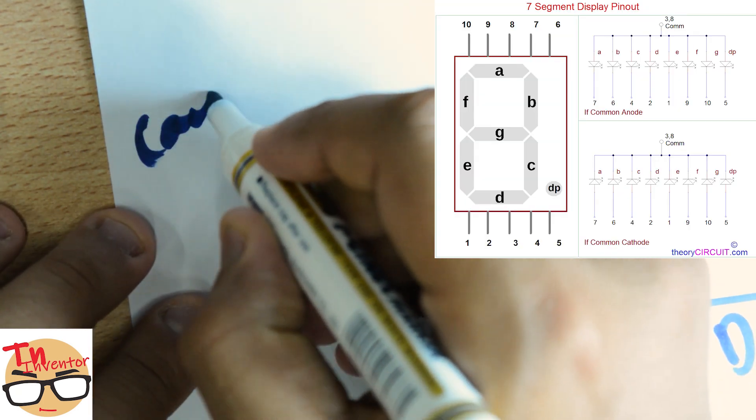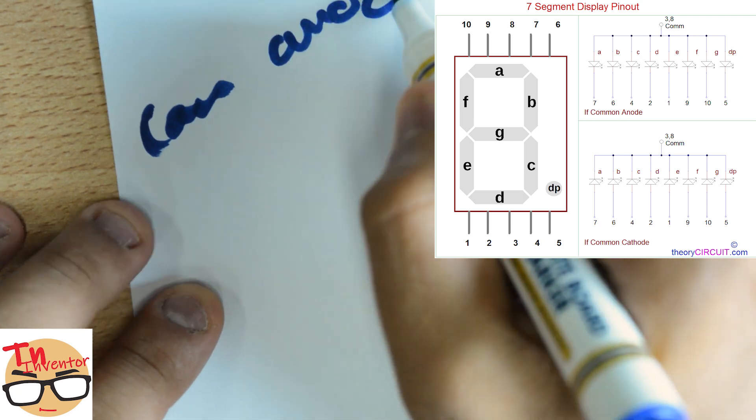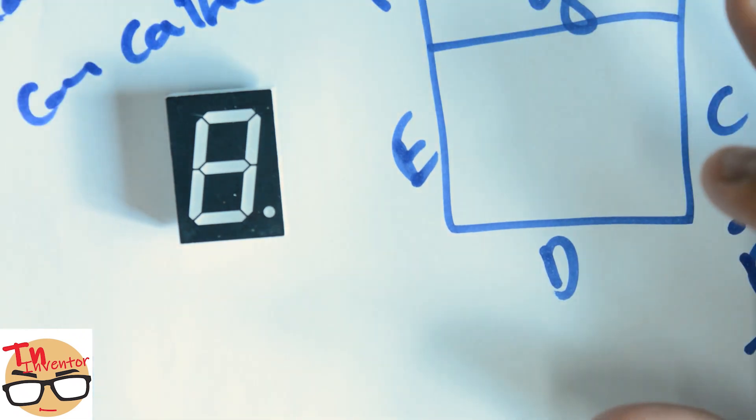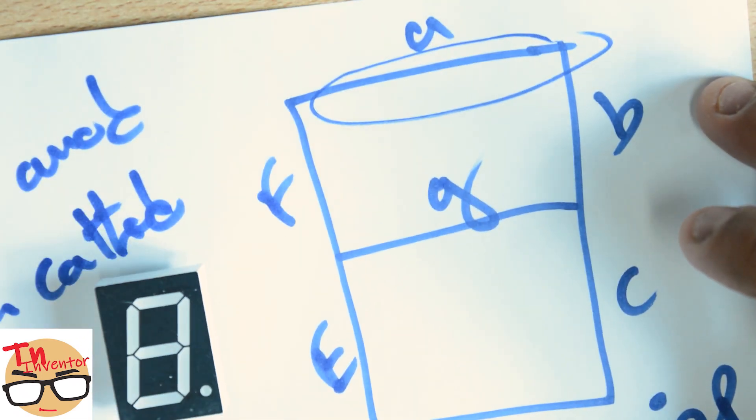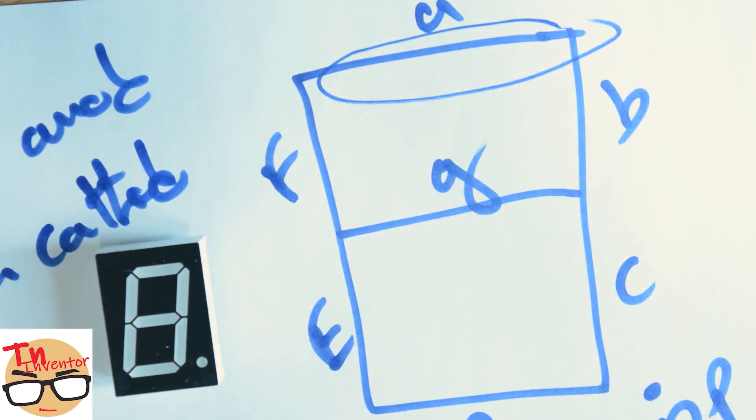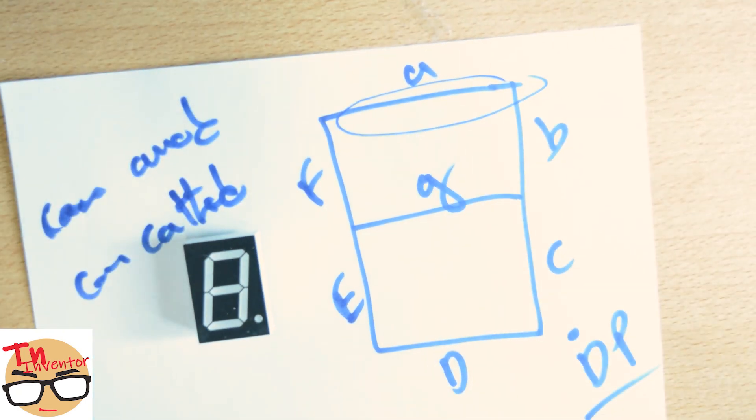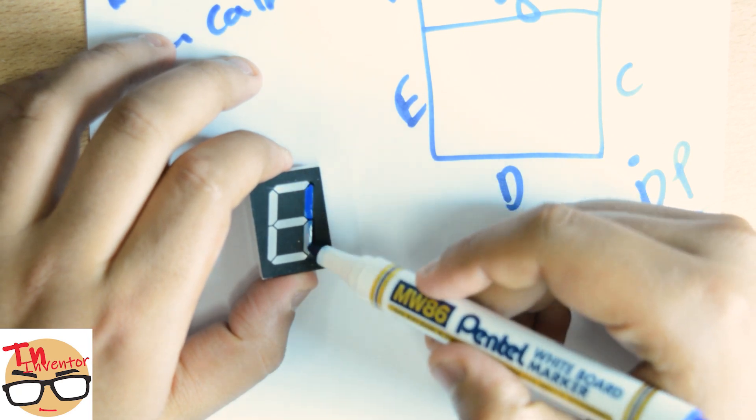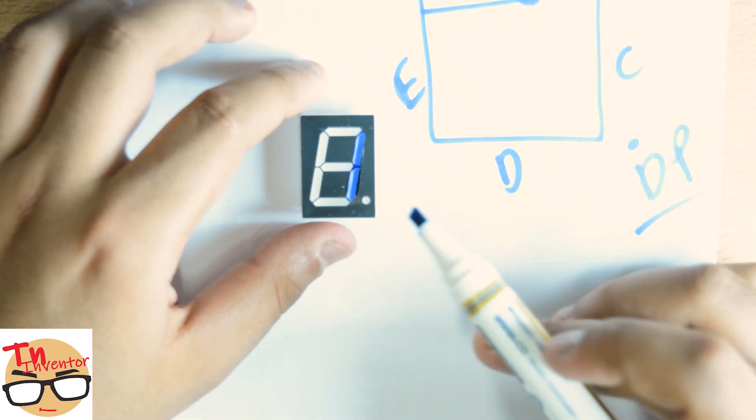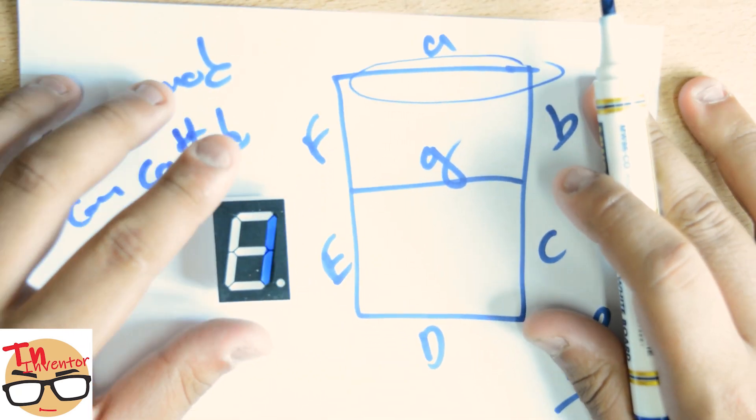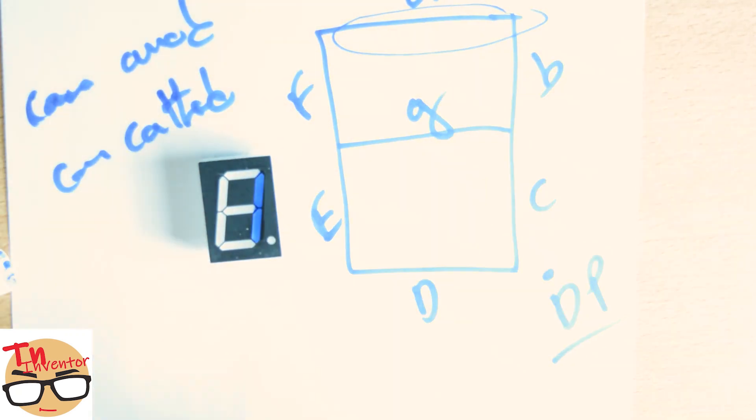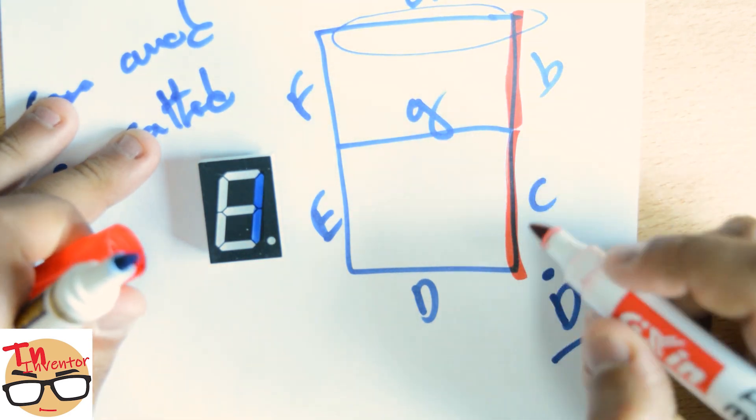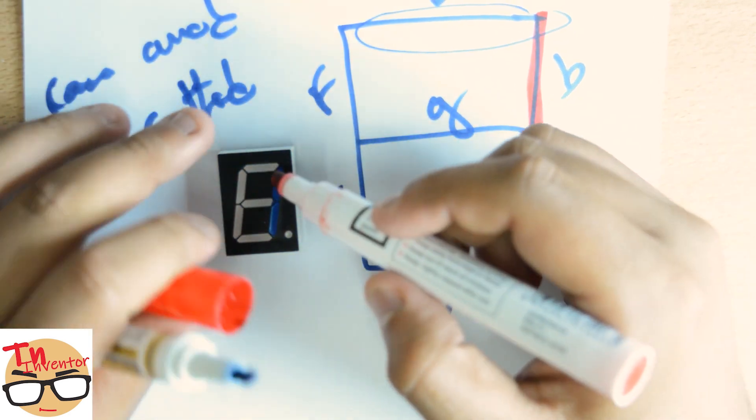Both work almost the same way. For example, if you're trying to light number one, you want number one to light up. What you're going to do is light up B and C, and that's how you get your number one.